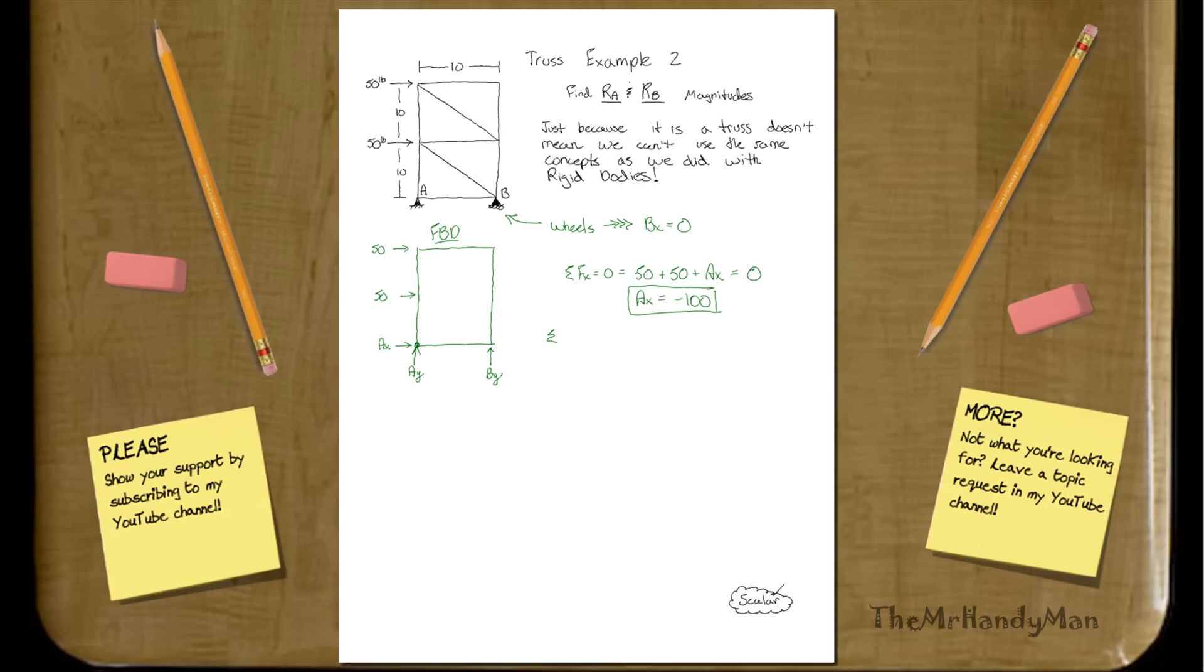What about our Y direction? Sum of F_Y is equal to zero as well. Well, the only things that really participate in that is A_Y plus B_Y. And that equals zero, so we know that A_Y is equal to negative B_Y. So we just know that they're negatives of each other, opposite of each other.